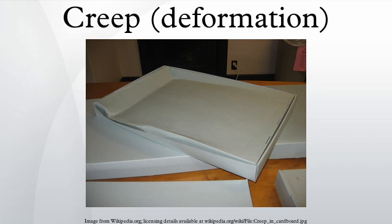Viscoelastic creep data can be presented in one of two ways. Total strain can be plotted as a function of time for a given temperature or temperatures. Below a critical value of applied stress, a material may exhibit linear viscoelasticity. Above this critical stress, the creep rate grows disproportionately faster. The second way of graphically presenting viscoelastic creep is by plotting the creep modulus as a function of time. Below its critical stress, the viscoelastic creep modulus is independent of the stress applied. A family of curves describing strain versus time response to various applied stresses may be represented by a single viscoelastic creep modulus versus time curve if the applied stresses are below the material's critical stress value.